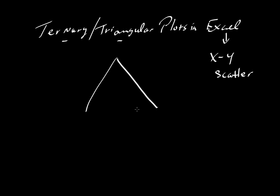Let's say we have a triangular diagram where we have three components: A, B, and C, where A is bottom left, C is top, and B is at the right.